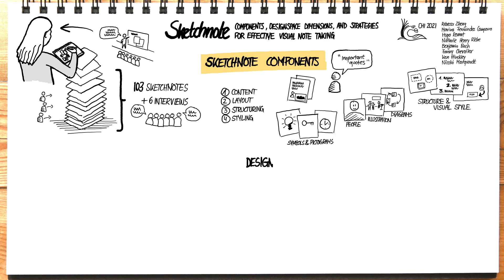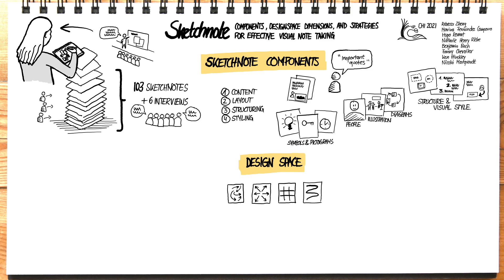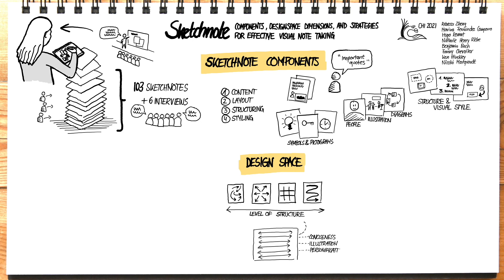Overall, we identified a rich design space of different types of sketchnotes. The layout and visual style of sketchnotes vary greatly — some are freeform pieces of information, others are organized as a mind map, grid structure, or linear format similar to comics. Further high-level dimensions of the design space include the level of conciseness, illustration, personification, visual cohesion, and craftsmanship.